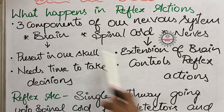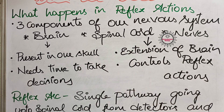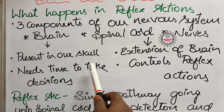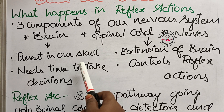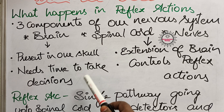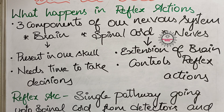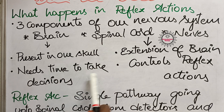The brain is present in our skull region. It is made up of a bundle of neurons and takes decisions for our body — deciding what actions, responses, and functions to carry out. It controls both voluntary and involuntary actions, but it needs some time to take those decisions and analyze responses.